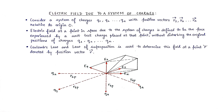Hello students, today we will read electric fields due to a system of charges. In the previous class we read what electric field is, how it is denoted, what kind of quantity it is. So just going for a recap: electric field is denoted by symbol capital E and it is a vector quantity, so capital E is always denoted with an arrow at its head. It is given as force divided by a given charge.